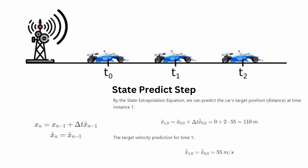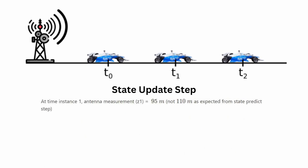This was your state predict step — you have position and velocity for time t equals 1. Now let's go to the state update step. At time instance 1, the antenna measurement distance is 95 meters, not 110 meters as expected from the state predict step. There's a 15-meter difference between the predicted and measured distances. In this scenario, there are two possible reasons: the antenna measurements are not precise, or the car has changed its velocity between measurements.